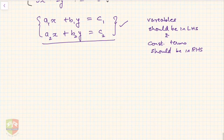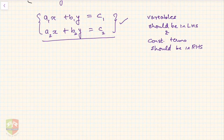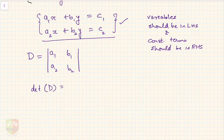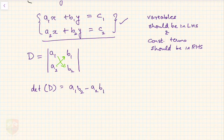Now let us define a few determinants. The first determinant D is the determinant of the coefficients of x and y. The coefficients are a₁, a₂ and b₁, b₂, so the value of determinant D is a₁b₂ minus a₂b₁.